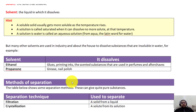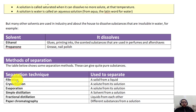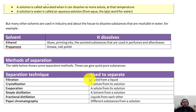We have different methods of separating mixtures: filtration, crystallization, evaporation, simple distillation, fractional distillation, and paper chromatography. Each method is used to separate a certain kind of mixture. Filtration is used to separate undissolved solid from a liquid. Crystallization is used to separate a dissolved solute from its solution. Evaporation also separates a dissolved solid from its solution.